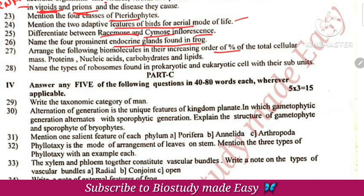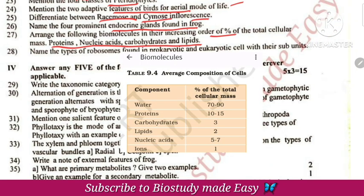Increasing order of cellular components: proteins make up 10 to 15%, carbohydrates make up 3%. Therefore the total cellular mass composition — any table of biomolecules can be referenced here.